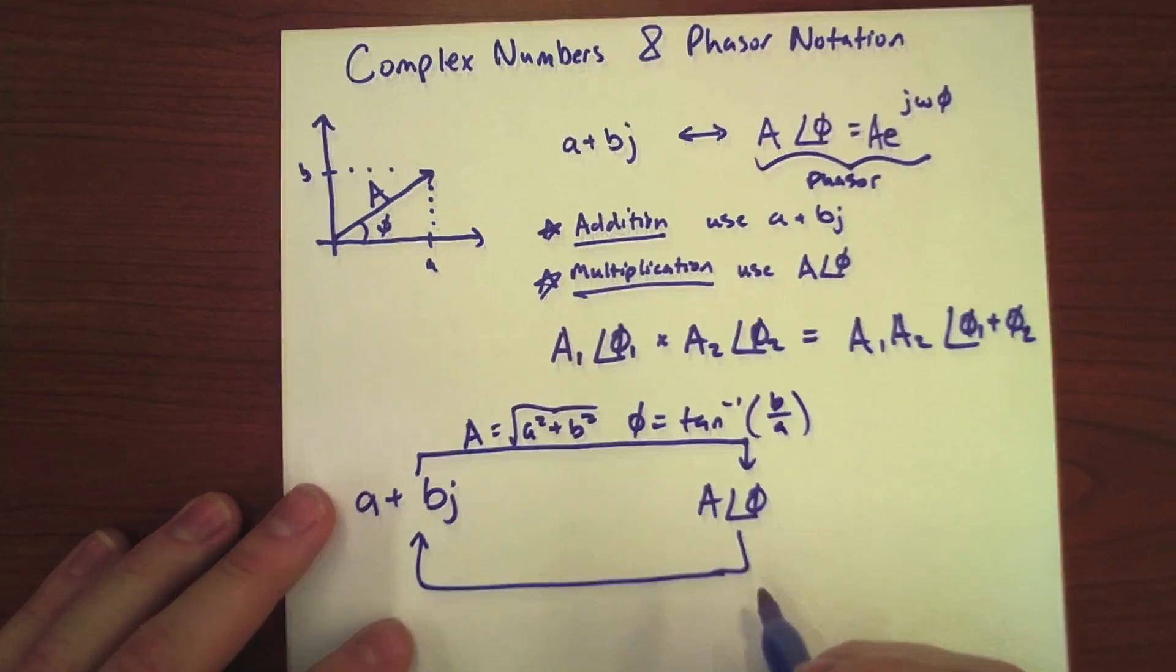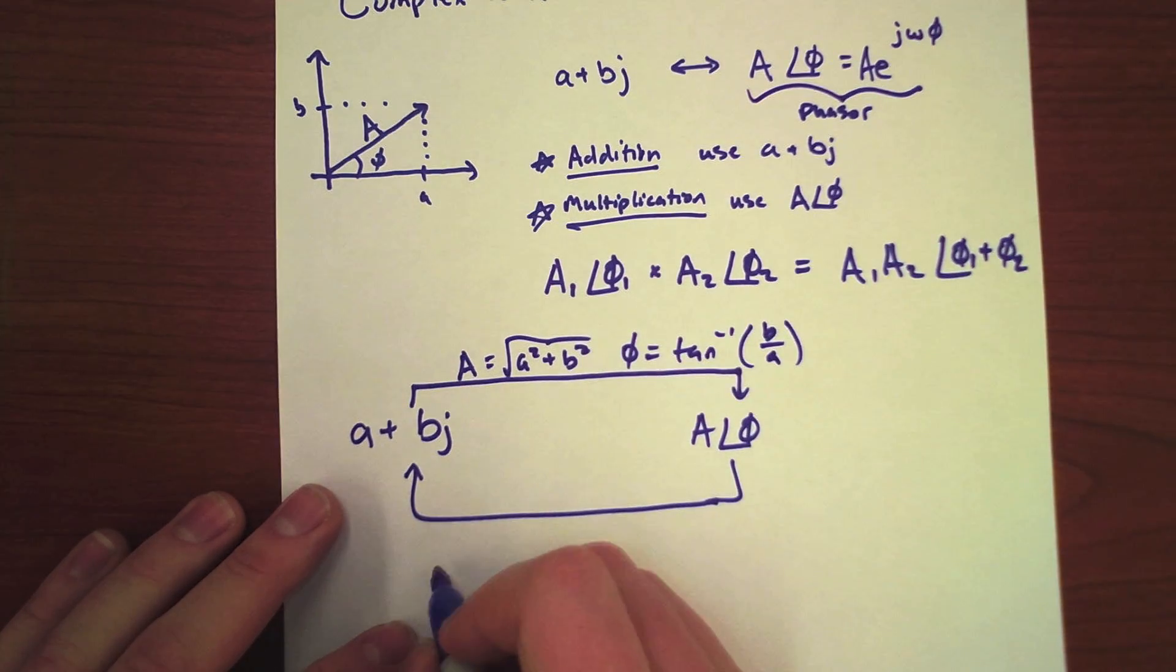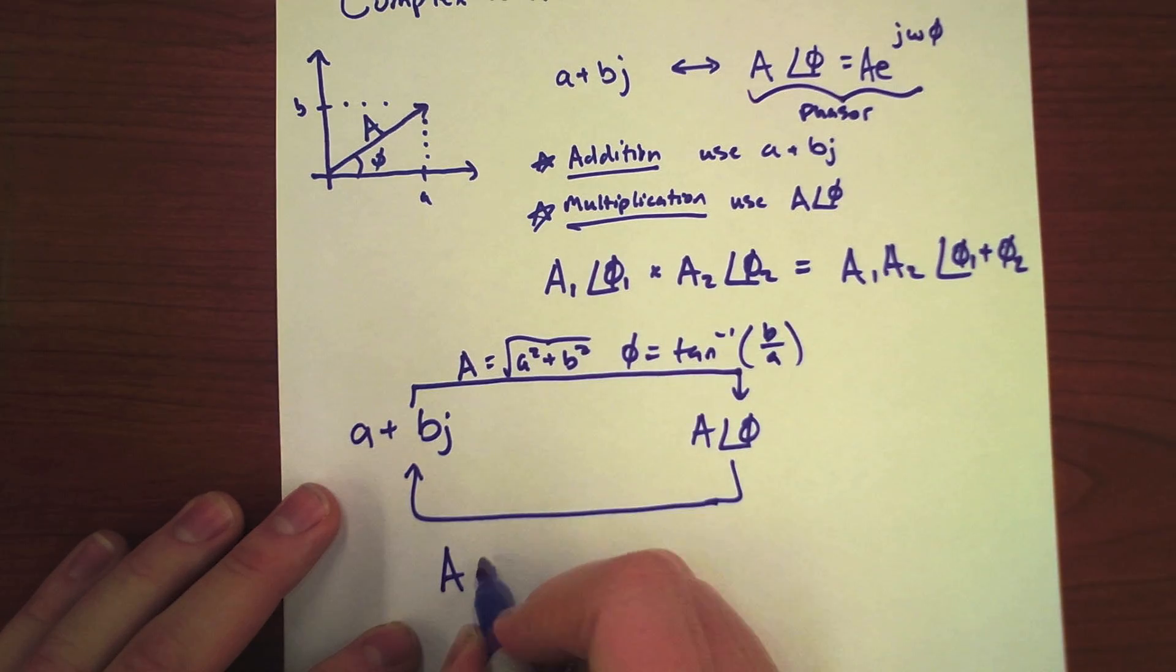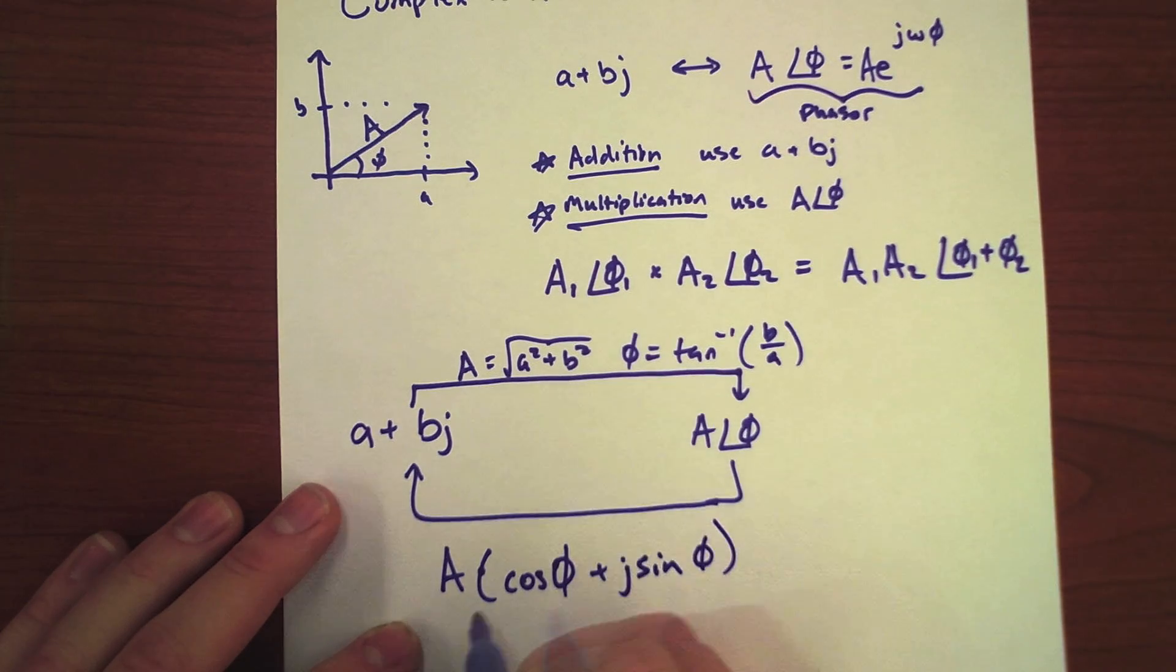Not too bad. And to go backwards, we know that thanks to Euler, we're going to take the magnitude times cosine of phi plus j times sine of phi. And that will end up with a plus bj.